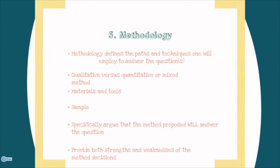The fifth element included in a proposal is the methodology. The methodology defines the path or techniques that you will use to answer your question, address your problem, or test your hypotheses. It might be qualitative or quantitative, or a mixture of both. In the methodology section of the proposal, your committee will expect to see your materials and tools, such as a coding sheet or an interview schedule. The methodology section should clearly identify your sample — what it is you're going to be examining. The methods section specifically argues that the methods proposed will, in fact, answer the question, and you should provide both the strengths and weaknesses of your decisions regarding methodology.